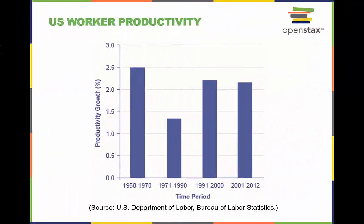U.S. growth in worker productivity was very high between 1950 and 1970. It then declined to lower levels in the 1970s and 1980s. The late 1990s and early 2000s saw productivity rebound, but then productivity sagged a bit in the 2000s. Some think that the productivity rebound of the late 1990s and early 2000s marks the start of a new economy built on higher productivity growth, but this cannot be determined until more time has passed.